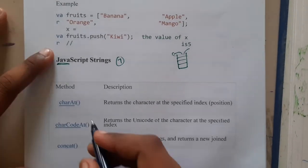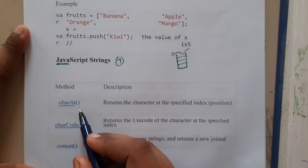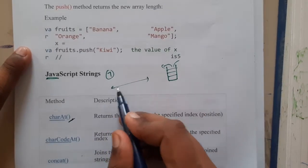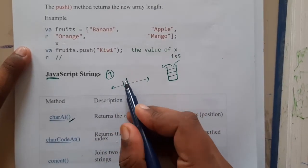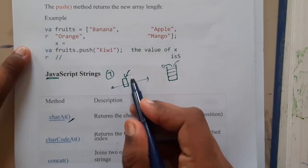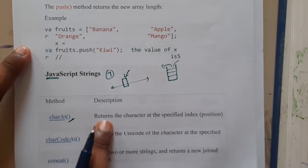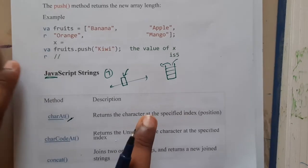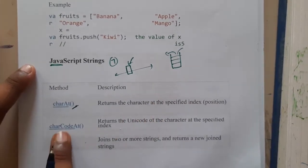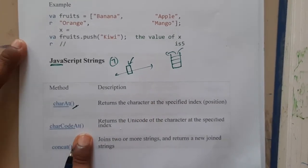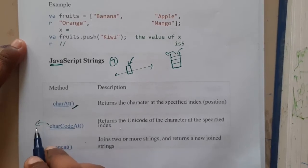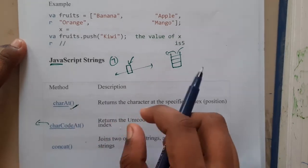The first operation is `charAt`. Basically, if there is a huge string and you want a particular character and you know its location, you will use `charAt` — it returns the character at a specified index. Then there is `charCodeAt`, which returns the Unicode value instead of the character itself.